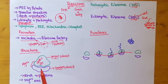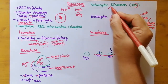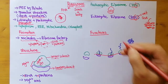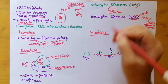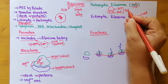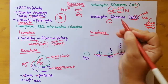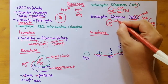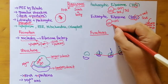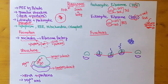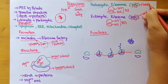Ribosomes are made up of two subunits — larger and smaller. In prokaryotic ribosomes, the smaller subunit is 30S while the larger subunit is 50S, and when they combine they give a size of 70S. In eukaryotic ribosomes, the larger subunit has a size of 60S while the smaller subunit has a size of 40S, so when they combine they give a size of 80S. Here, S stands for the Svedberg unit.